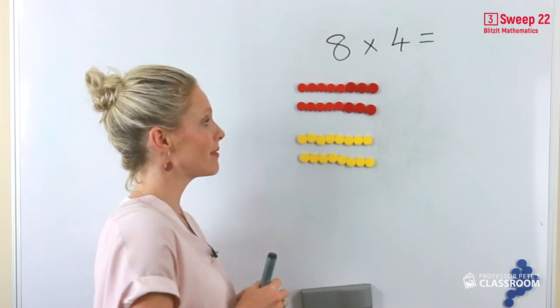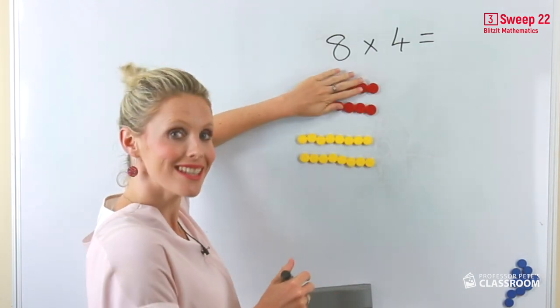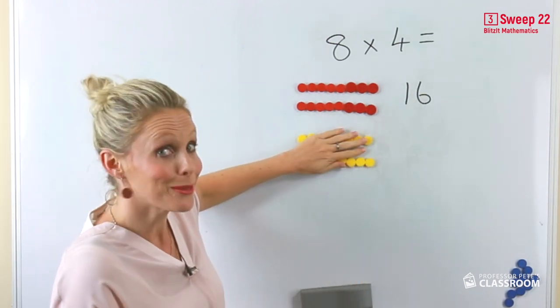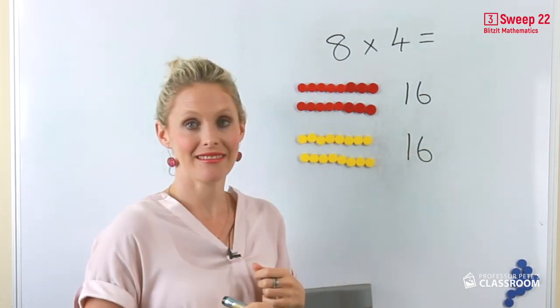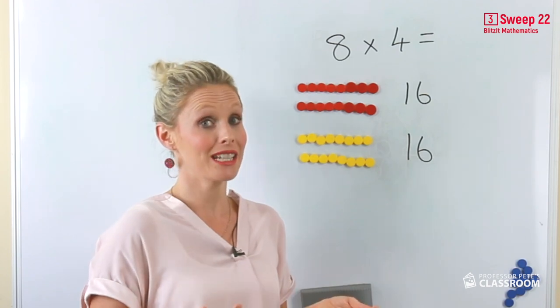Are you ready? Now we know that double eight equals 16. Now we need to add it together to find out what eight times four is.